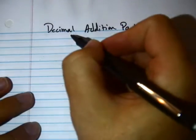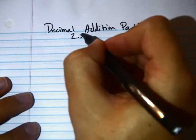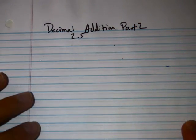Alright, let's do Part 2 real quick. This is Decimal Addition Part 2 and it is Section 2.5. And it's basically the same thing as we were doing before with one slight change.